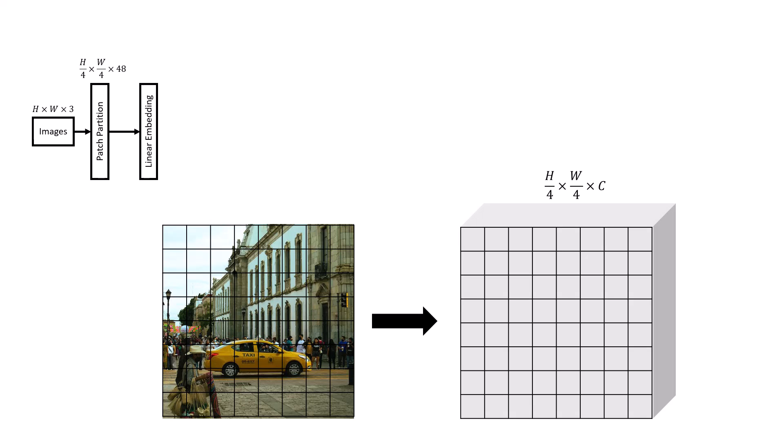If we just look at this patch partitioning, we can see it's a simple tensor reshaping from H×W×3 to H/4 × W/4 × 48. Intuitively, it's like transforming our elements from pixels to patches. The pixels have three channels RGB, but now our patches have 48 channels. So each patch is a 48-dimensional vector, and apparently 48 is not enough. So we have a linear embedding that maps from 48 to C, which is a hyperparameter, usually larger, like 96 or 128.